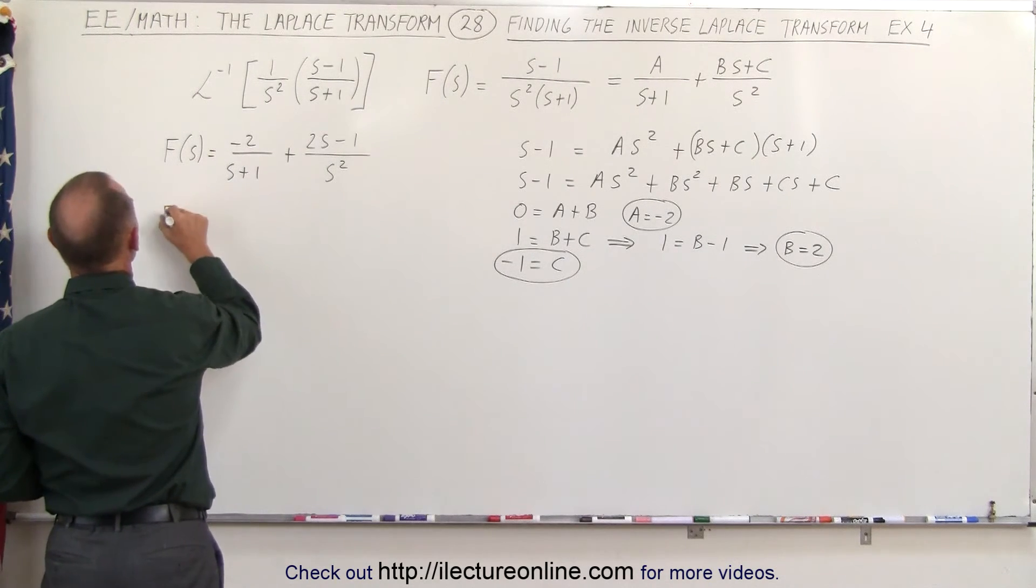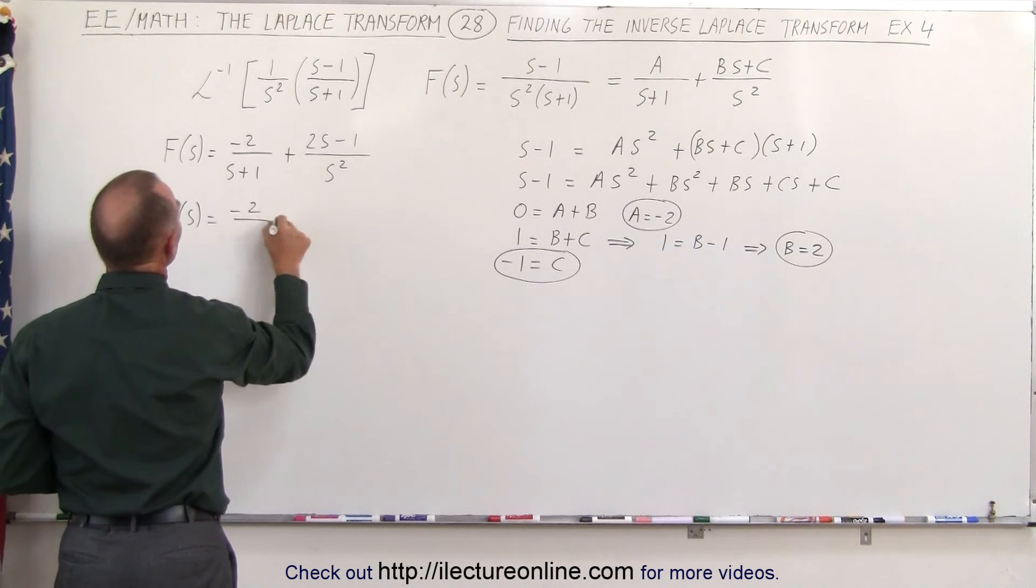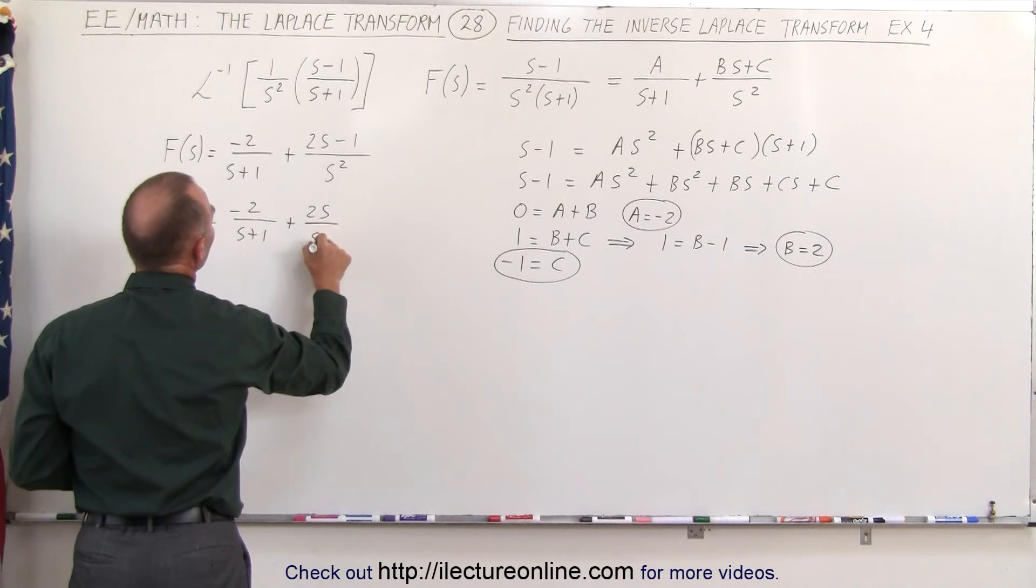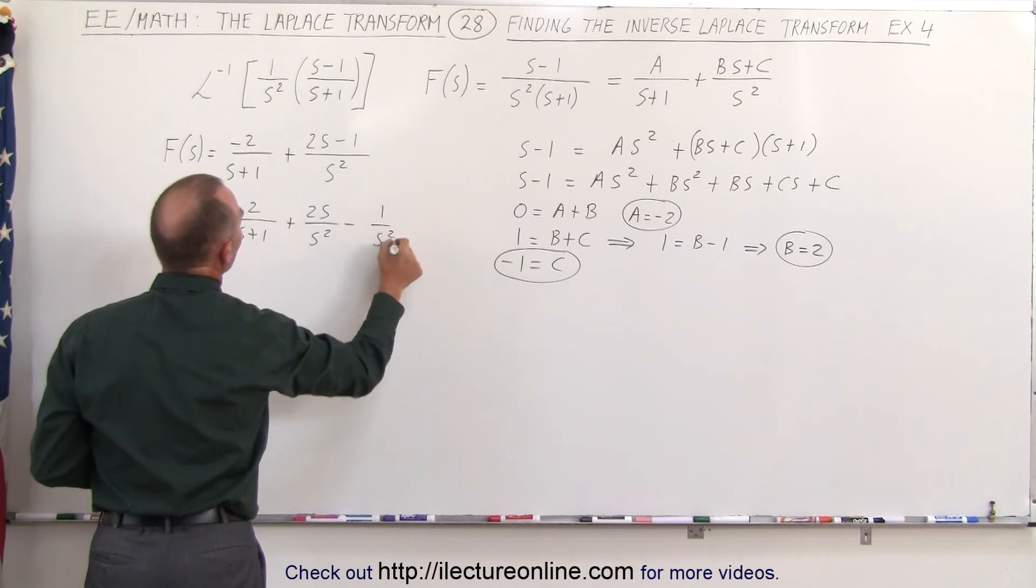So I can say that F of s can be written as minus two over s plus one, plus two s over s squared, minus one over s squared.